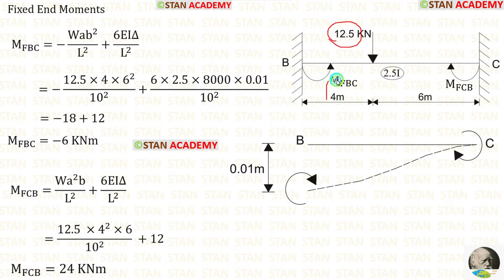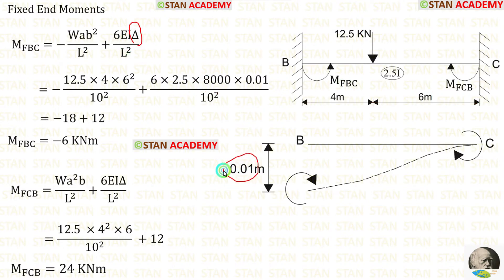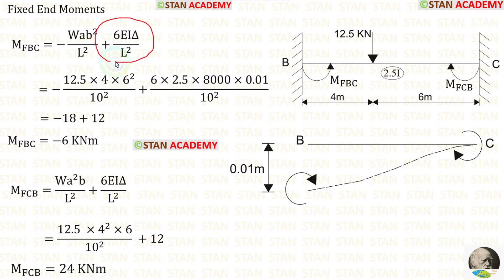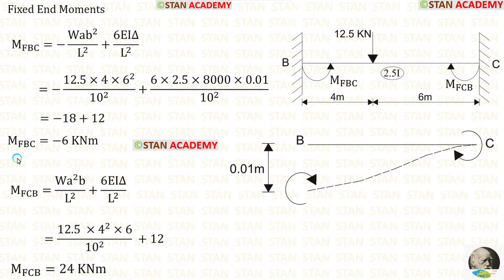Applying the values: W = 12.5, A = 4, B = 6, L = 10, EI = 8000, and δ = 0.01. For span BC, the moment of inertia is 2.5I, so we must multiply EI by 2.5. The fixed end moment due to sinking is the same for MBC and MCB. After calculations, MBC = −6 kNm and MCB = 24 kNm.